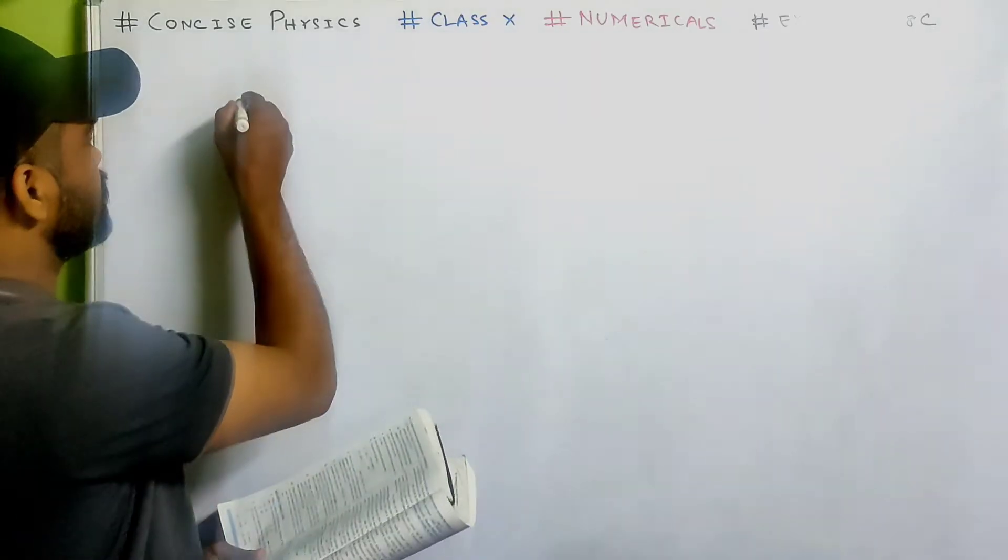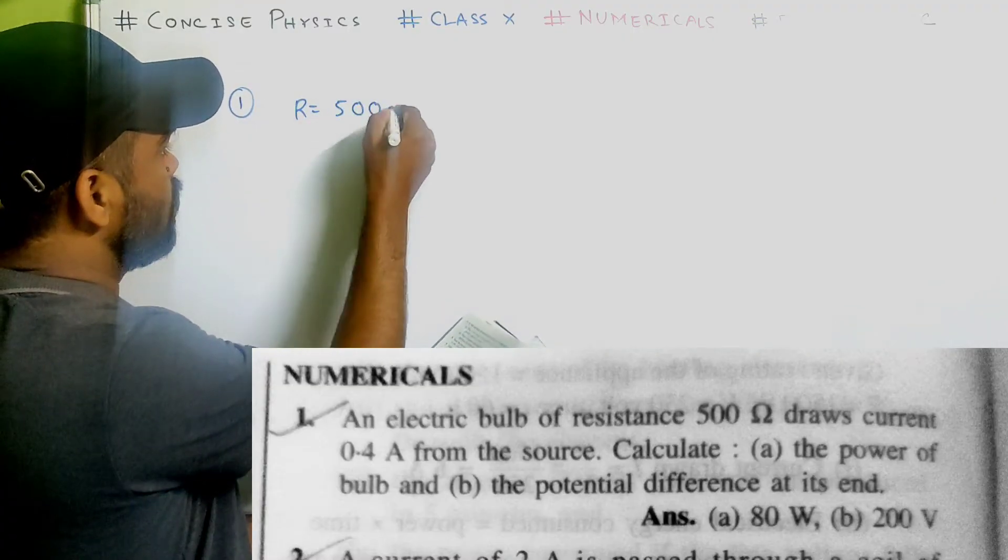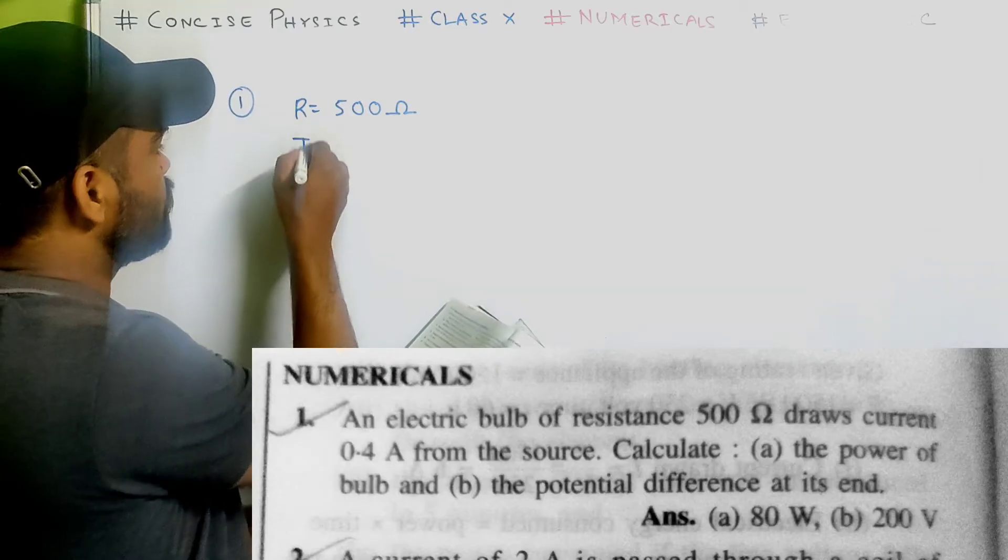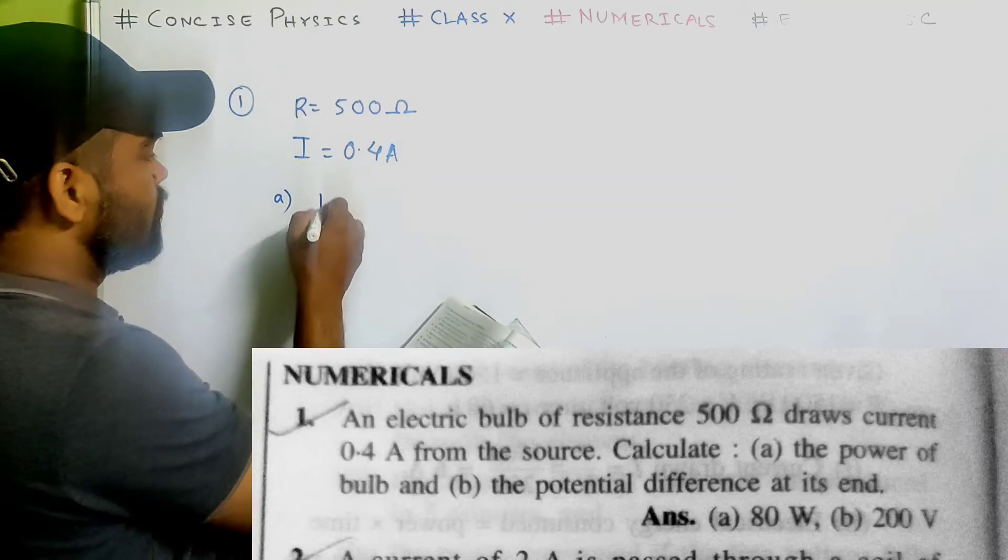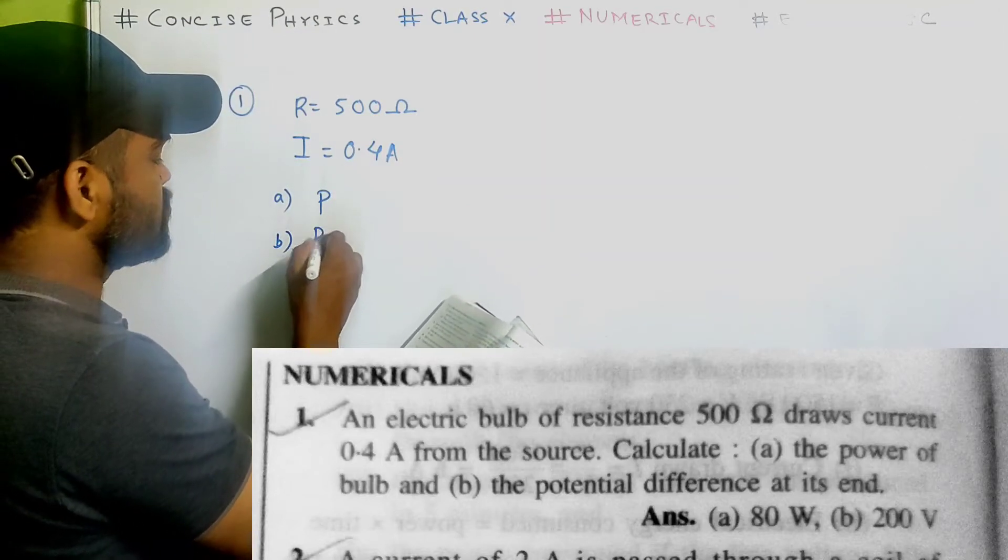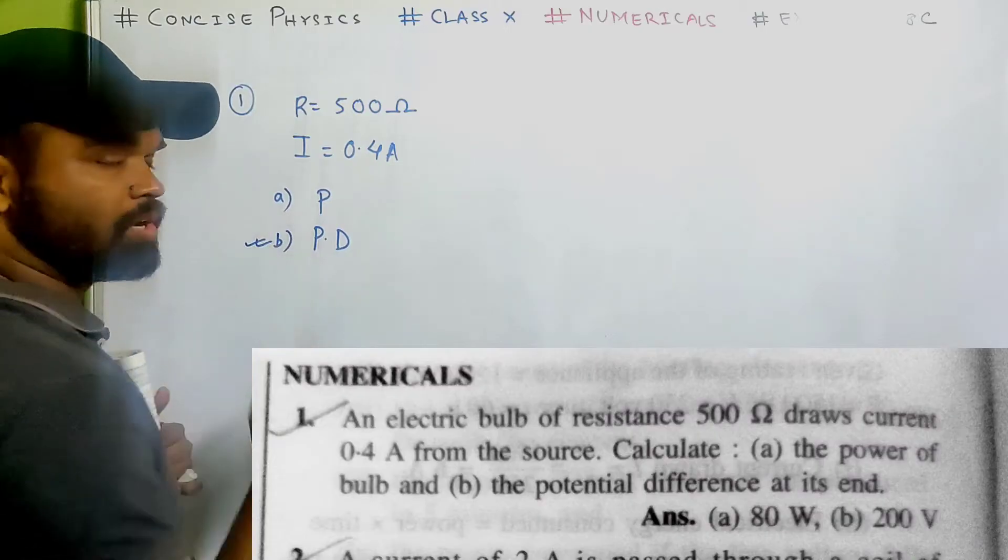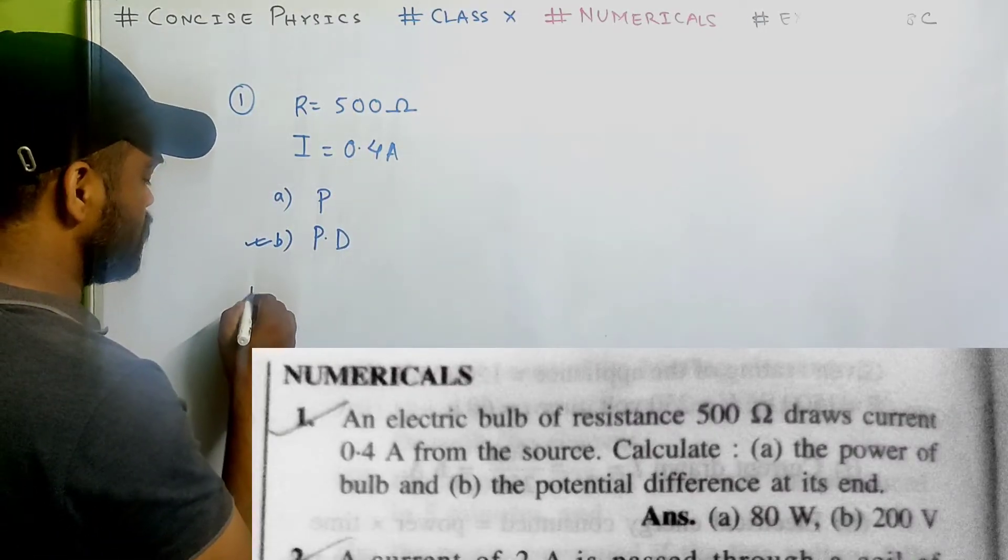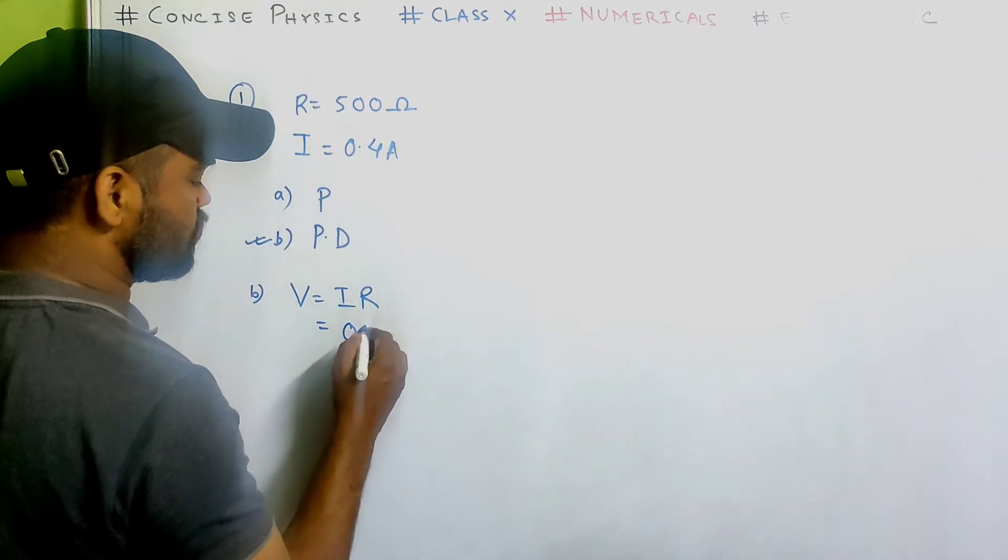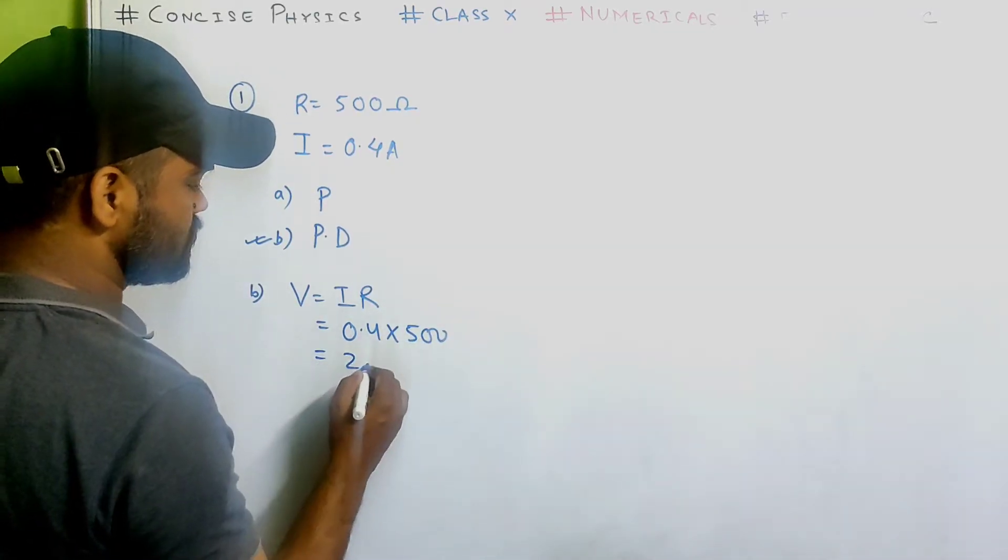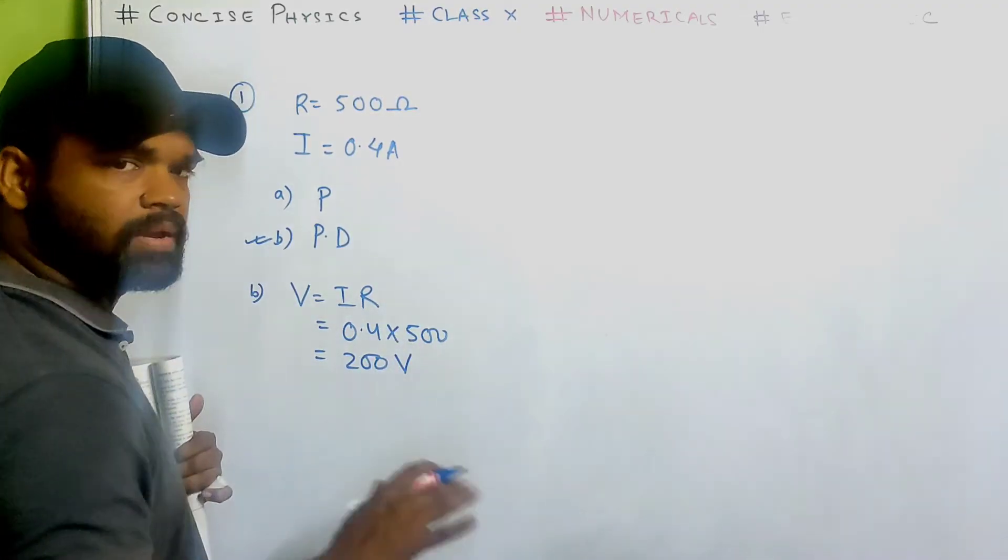Let us look at number 1. An electric bulb of resistance 500 ohm draws current of 0.4 ampere from the source. Calculate the power of the bulb and the potential difference at its end. First I'll find potential difference because we have i and r. We know by ohm's law v equals to ir. So just substitute the value. 0.4 multiplied by 500. That's 200 volt.